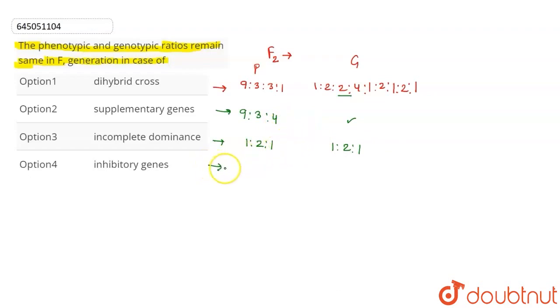Inhibitory genes, the ratios are the same as the others. This is the epistatic phenomena. So, this is option 3. Incomplete dominance case - the phenotypic and genotypic ratio is the same.